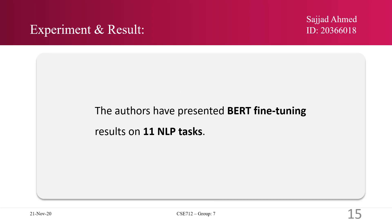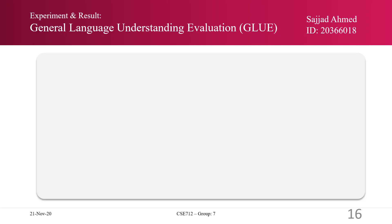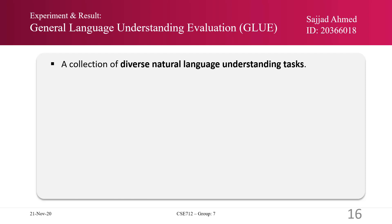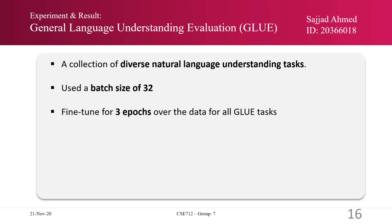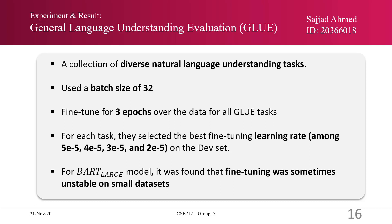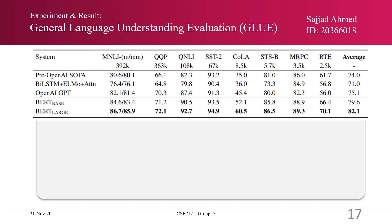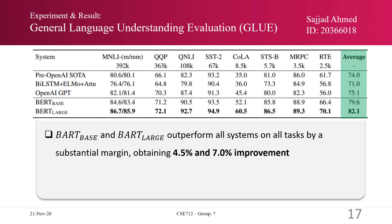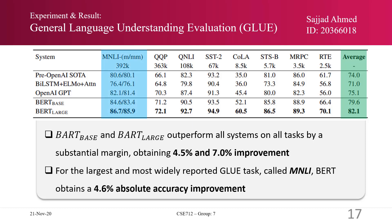Now I will be discussing the experiments and results. The authors presented BERT fine-tuning results on 11 NLP tasks. First, they considered the General Language Understanding Evaluation, or GLUE — a collection of diverse natural language understanding tasks. They used a batch size of 32 and fine-tuned for three epochs for all GLUE tasks, selecting the best fine-tuning learning rate on the dev set. BERT Base and BERT Large outperform all systems on all tasks by a substantial margin, obtaining 4.5% and 7% improvement respectively. For MNLI, the largest and most widely reported GLUE task, BERT obtains a 4.6% absolute accuracy improvement.